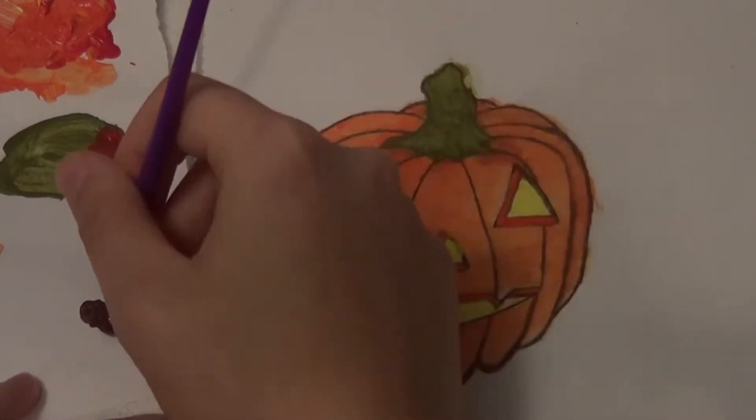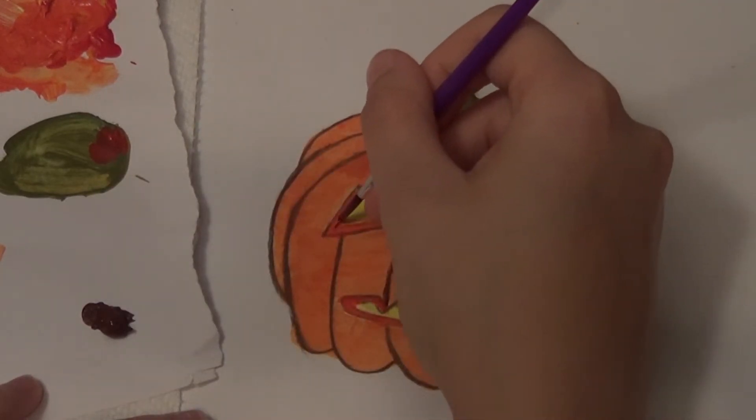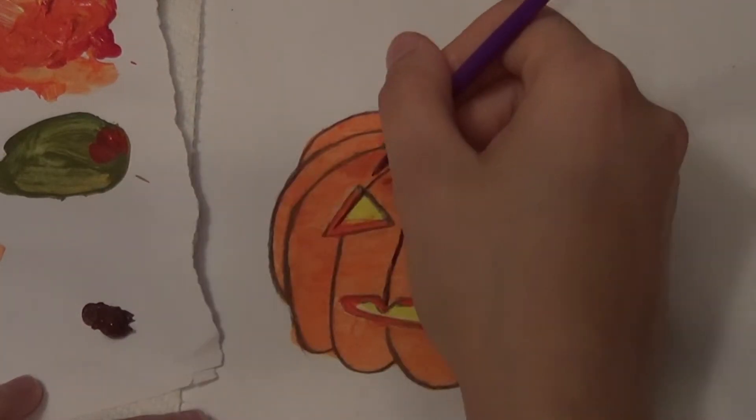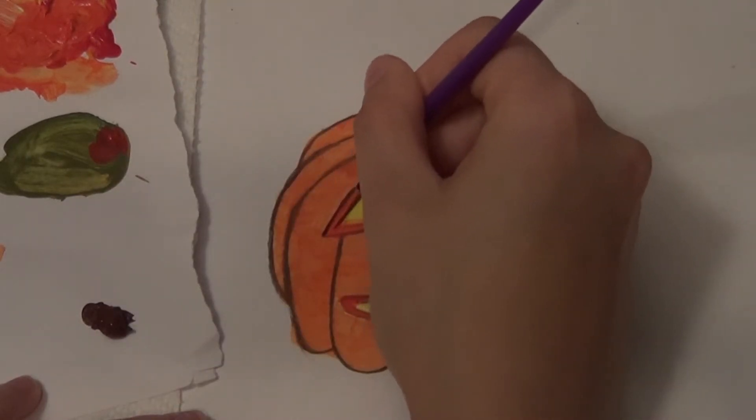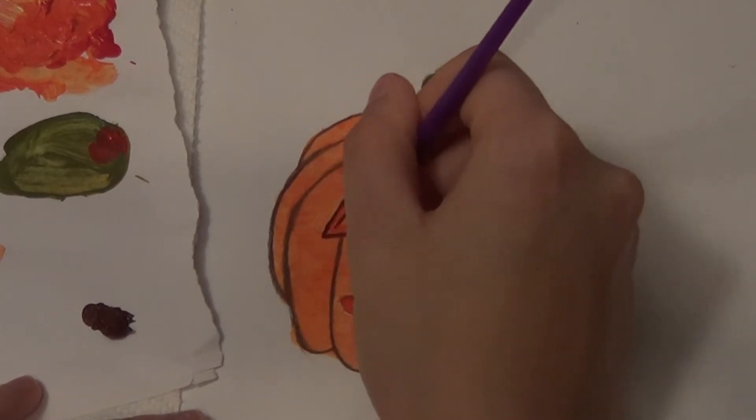I switched to a thinner brush for this so that I can make smaller lines. So I'm going to go over the outer lines and the lines on the sections with this.